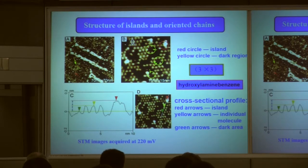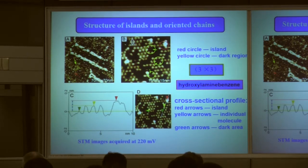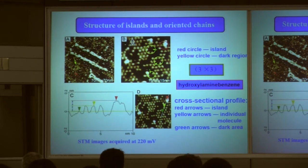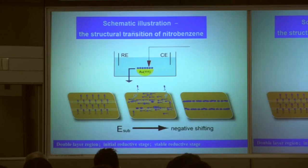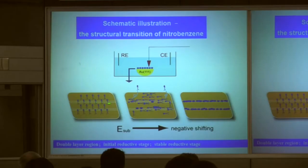However, somewhere there is not only one layer — maybe three or four layers. We measured the height of the molecular layer and found first, second, third, and fourth layers, meaning molecules pile up on the surface to form this molecular nanowire. Here is a schematic illustration: at the double-layer potential region, the molecule stands up, slightly tilted on the surface. But with the electrode potential scanning negatively, the molecule lies down on the surface.